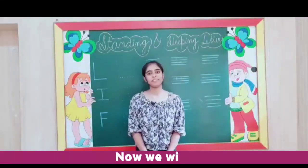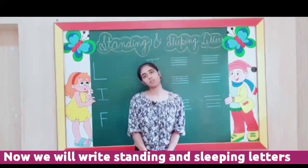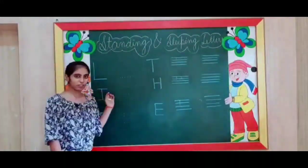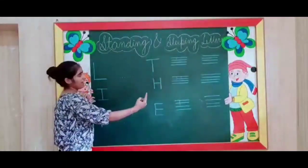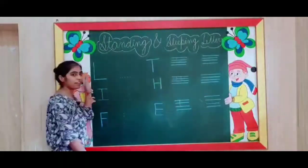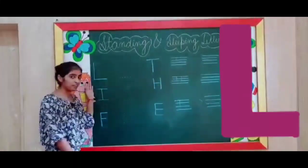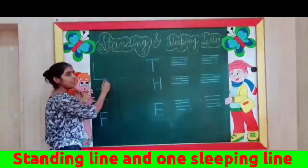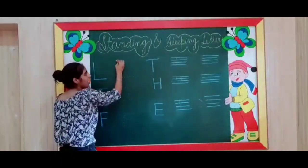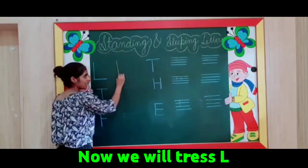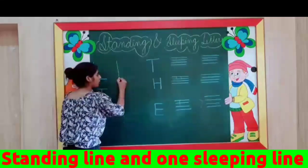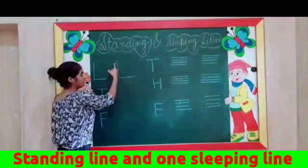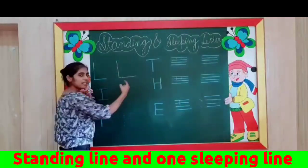Now we will write standing and sleeping letters. Here we have six letters that are constructed with standing and sleeping lines. The first letter is L — L with one standing line and one sleeping line. Now we will trace L: one standing line like this, and one sleeping line. This is L with one standing line and one sleeping line.